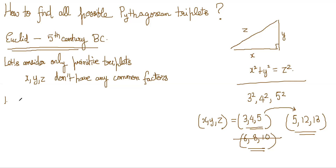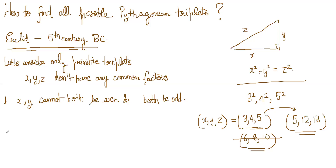The first thing Euclid said was that in any such primitive triplet, x and y cannot both be even and cannot both be odd. So either x is even and y is odd, or x is odd and y is even.